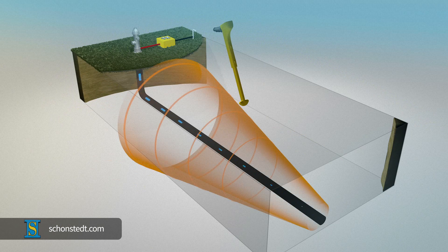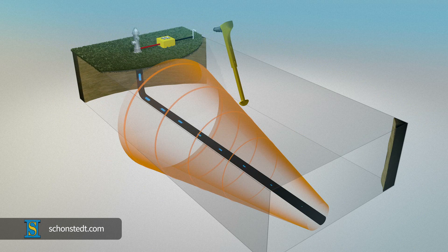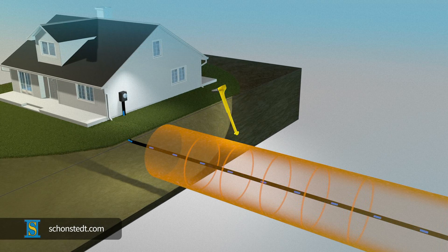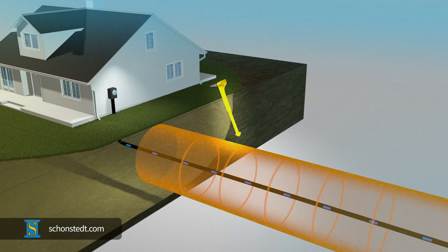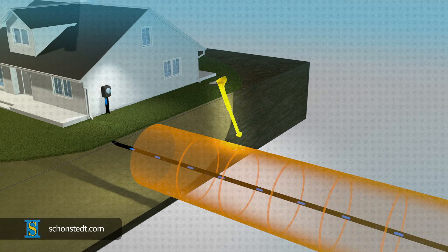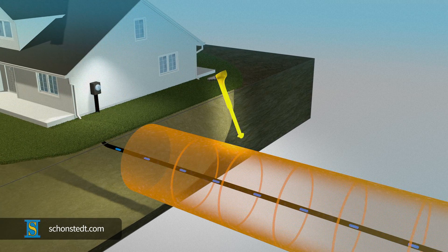And a receiver is used to detect the field created by the current. The second method is known as passive locating because the receiver detects a field created by the current that's already circulating on the cable. No transmitter is required.